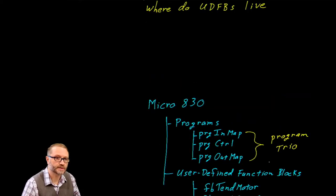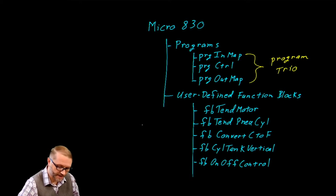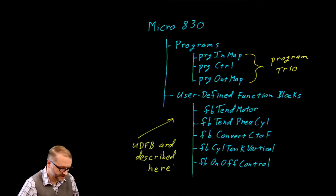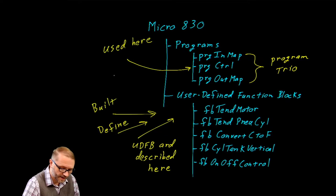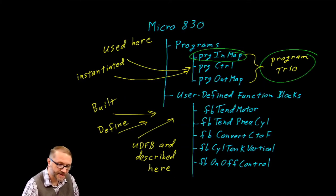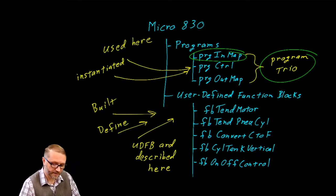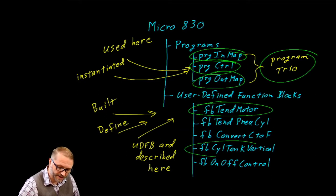Now that we have this representative project tree, let's go back to our original question: where do the user-defined function blocks live? The answer is they live in two places. First, we describe, build, and define them in the function blocks section. They are used and instantiated in the program. We've been very particular about the style in our program trio: the in-map maps physical I/O to a global variable, the out-map maps a global variable to physical I/O, and program control is where all control logic takes place — where you'd find commands like 'tend the motor' or 'calculate the volume of a tank.'